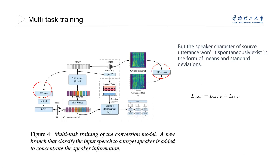However, the speaker characteristics of source utterances won't spontaneously exist in the form of means and standard deviations. So we propose to add an auxiliary speaker classification loss derived from the statistics of the hidden representation before statistic replacement.